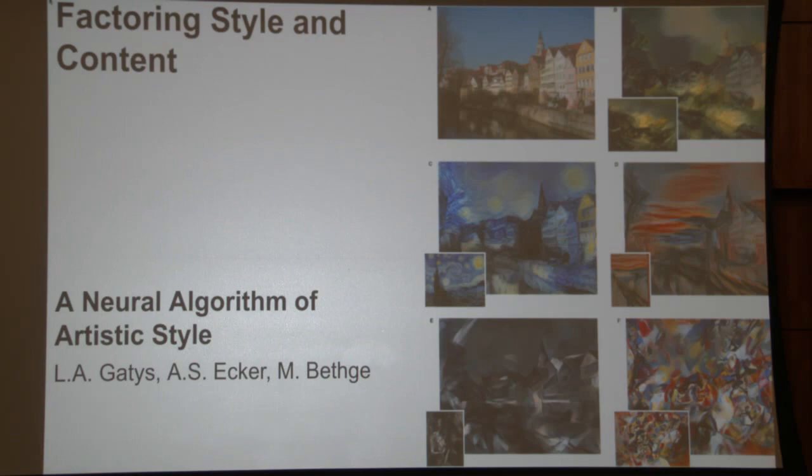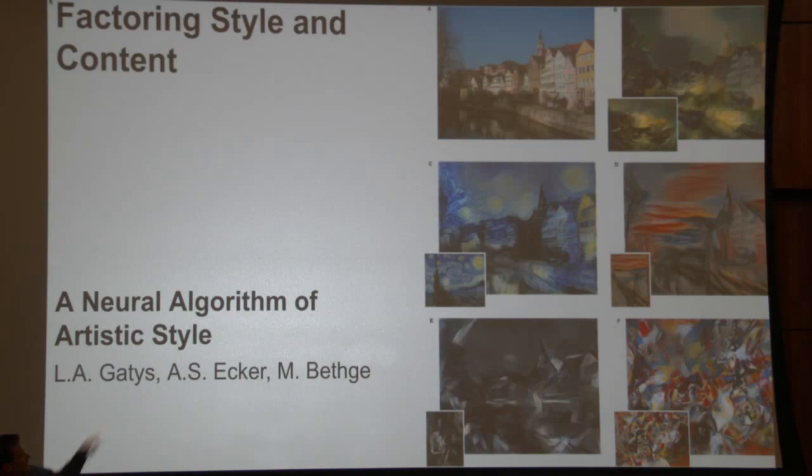Researchers at the Max Planck Institute and the University of Tübingen have factored a model where you give it two images — one a photograph, the other a painting — and it renders the photograph in the style of that painter. You give it a Van Gogh-like painting and it makes the photo Van Gogh-y. It actually does a pretty good job.